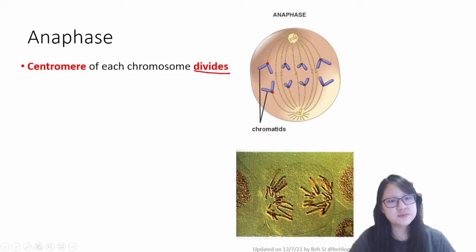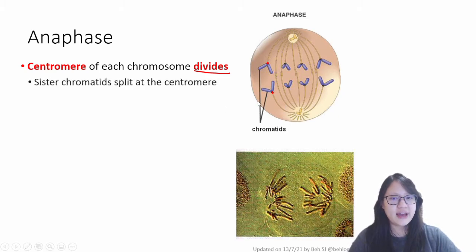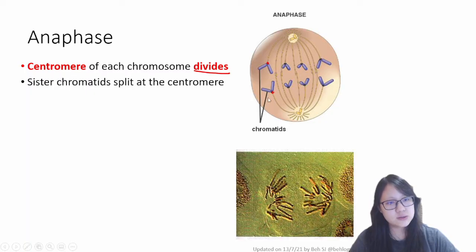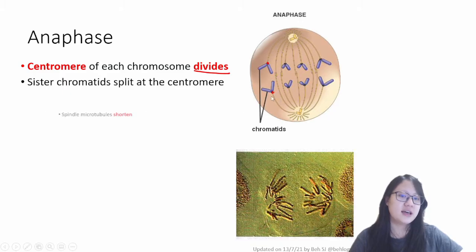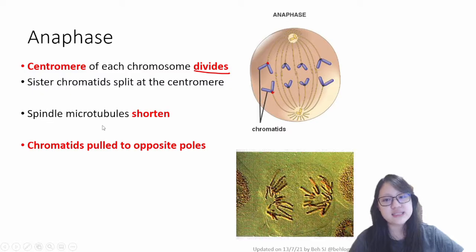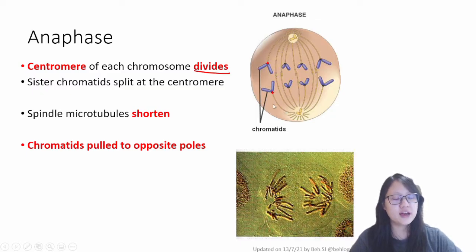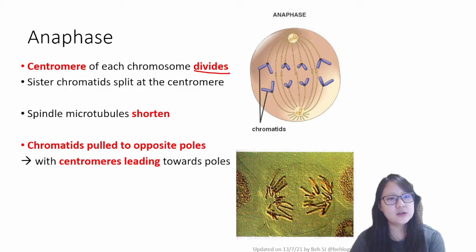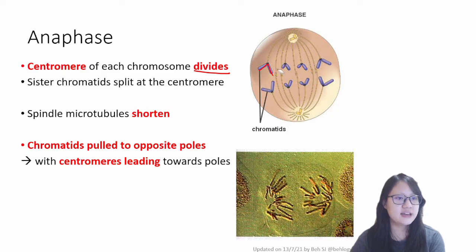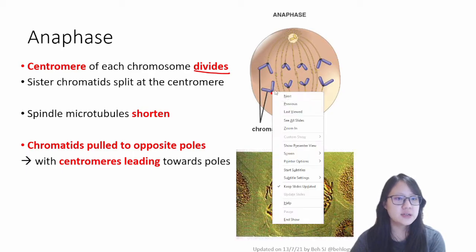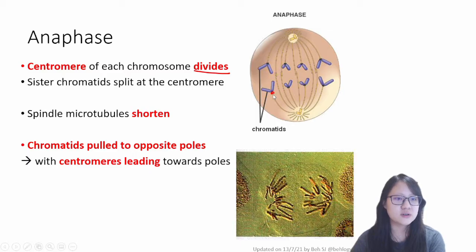The sister chromatids, which were one chromosome, split at the centromere and get pulled to opposite poles. This is because the spindle microtubules actually shorten, and therefore when they shorten, the chromatids get pulled. If you observe carefully, you'll realize that the centromeres are leading toward the pole — the centromere is closest to the centrosome. The spindle fibers are attached at the centromere, so that part moves forward first.